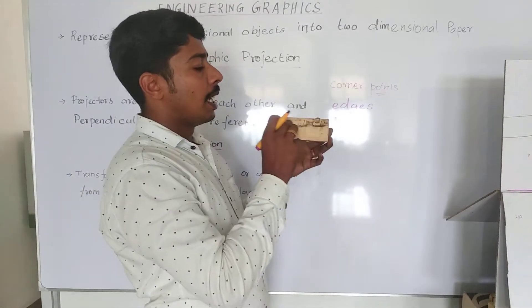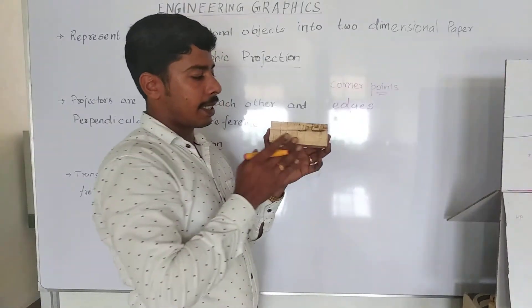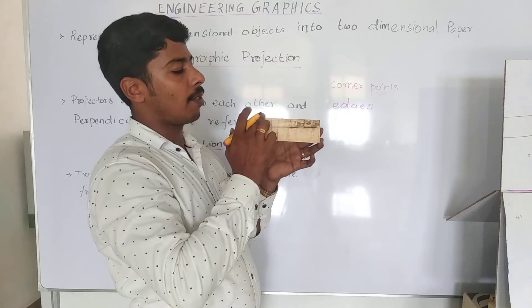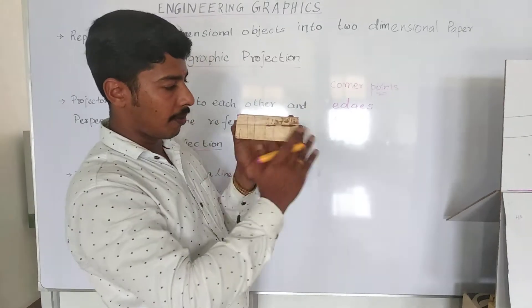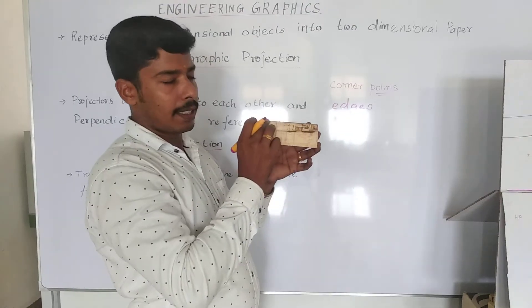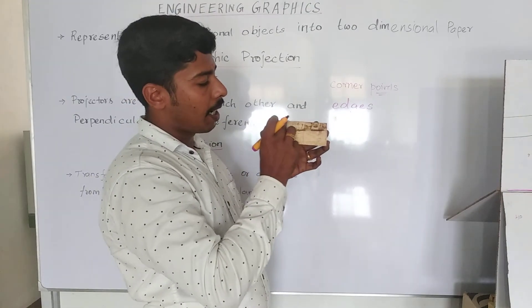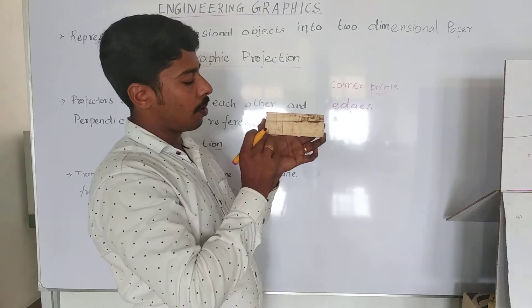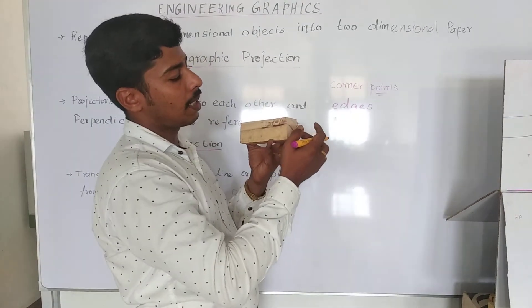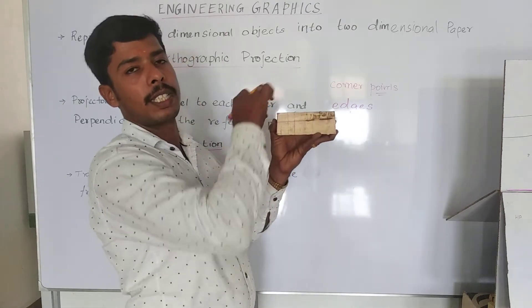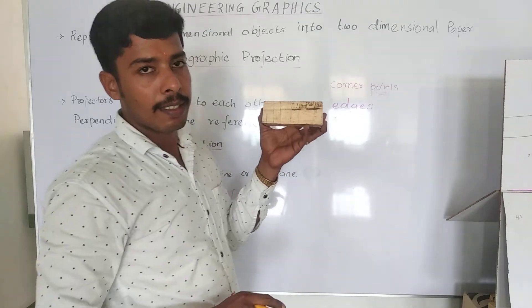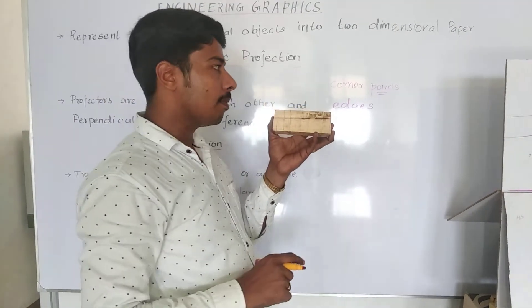Edges, edges, surface line, surface line. Edges, edges — two, three, four edges, five, six, seven, eight edges.